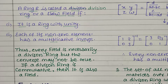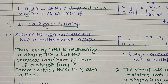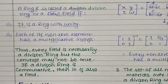For a field, what were the conditions? A ring must be a commutative ring with unity, and each non-zero element must have a multiplicative inverse. So what is the difference between skew field and field? In a skew field, commutativity with respect to multiplication is not necessary, but in a field, commutativity is required. In a skew field we only need a ring with unity, while in a field we need a commutative ring with unity.